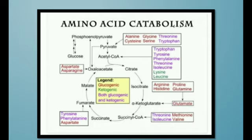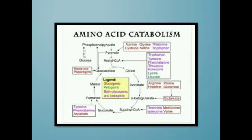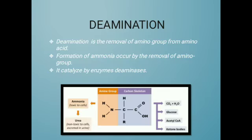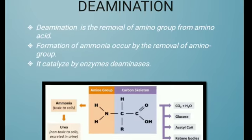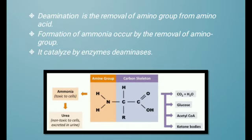The next topic is deamination. Deamination is the removal of an amino group from an amino acid, resulting in the formation of ammonia. It is catalyzed by enzymes called deaminases. The amino group is removed from the amino acid's carbon skeleton, forming ammonia, which is toxic to cells. It is then converted into urea, which is non-toxic, and excreted as urine.